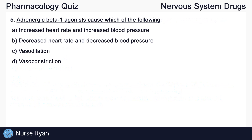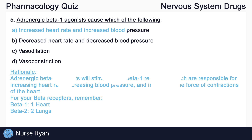Question number five: adrenergic beta-1 agonists cause which of the following? The answer here is A, increased heart rate and increased blood pressure.